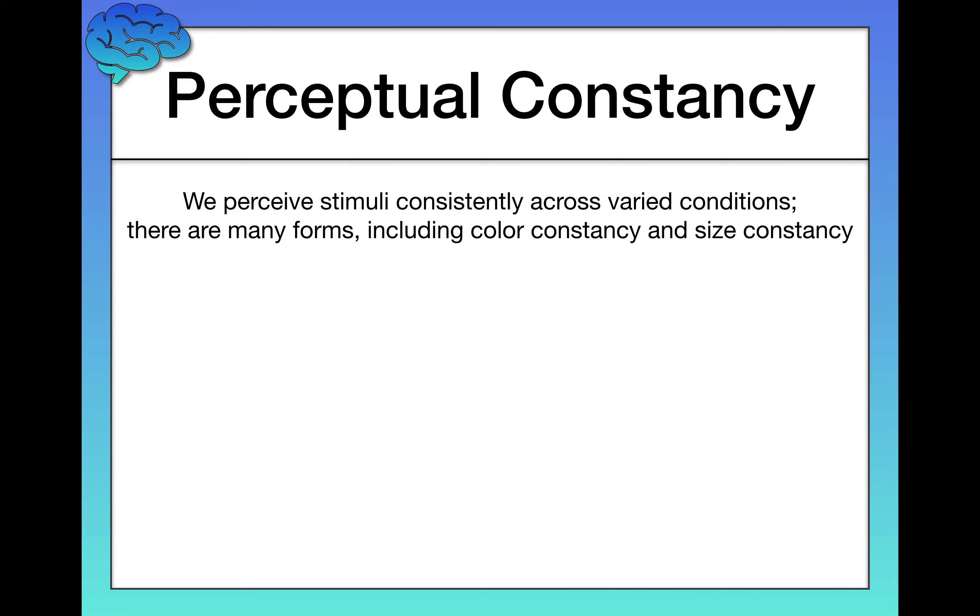Perceptual constancy, as the name implies, is simply the idea that we perceive stimuli consistently across varied conditions. And there are lots of different forms of perceptual constancy. I'm going to talk about two, color constancy and size constancy.